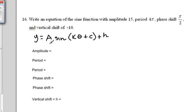A refers to the amplitude. k is not the period, however we use the period in order to find k. c is not the phase shift, however we use the phase shift in order to get c. And h is simply the vertical shift.